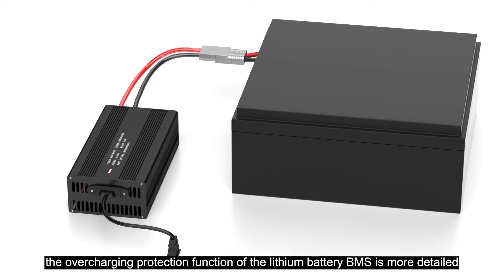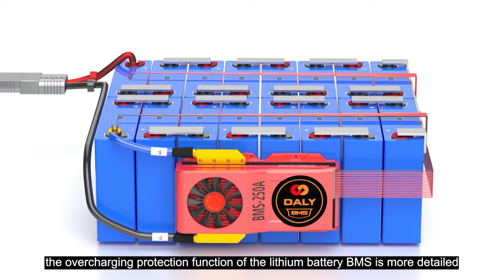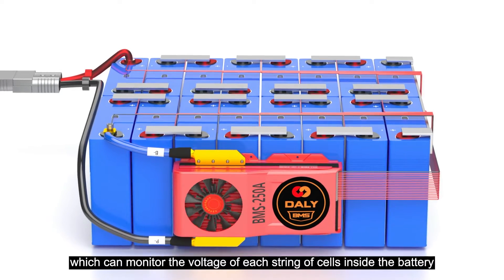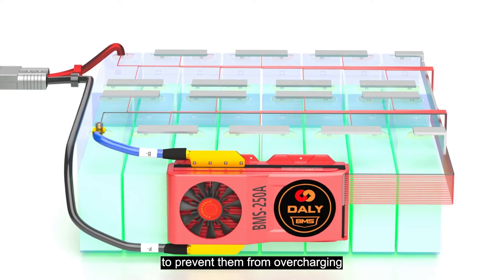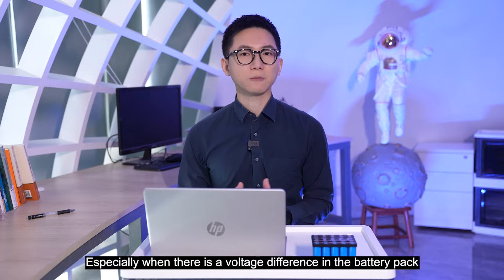However, the overcharging protection function of the lithium battery BMS is more detailed, which can monitor the voltage of each string of cells inside the battery to prevent them from overcharging. Especially when there is a voltage difference in the battery pack, the importance can be highlighted.